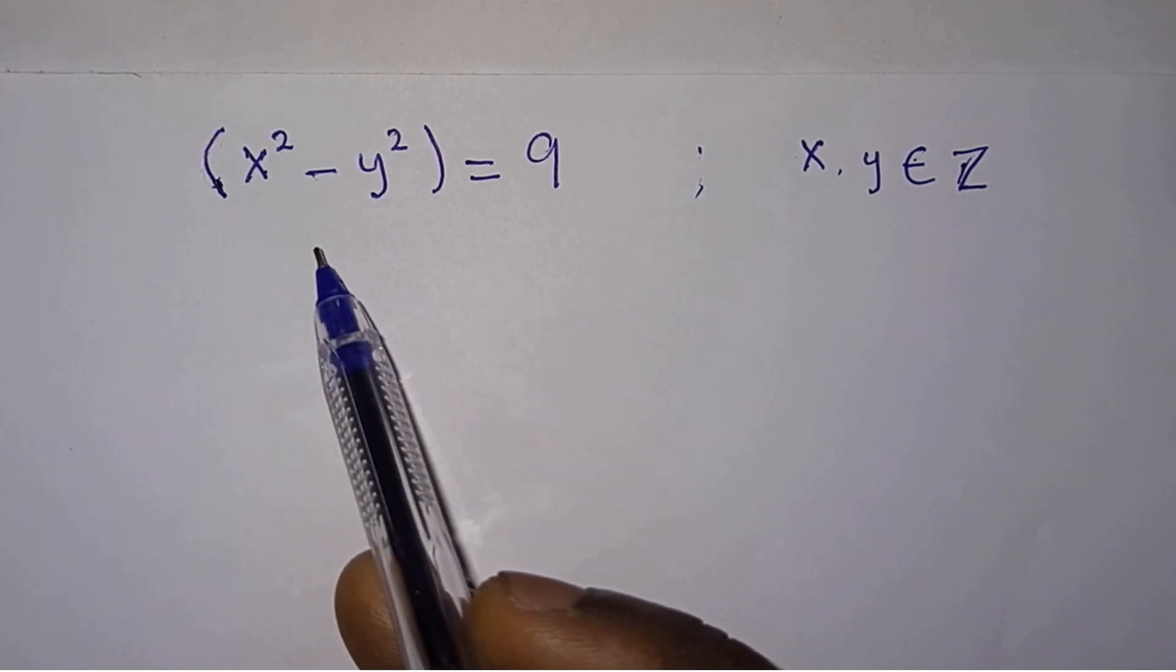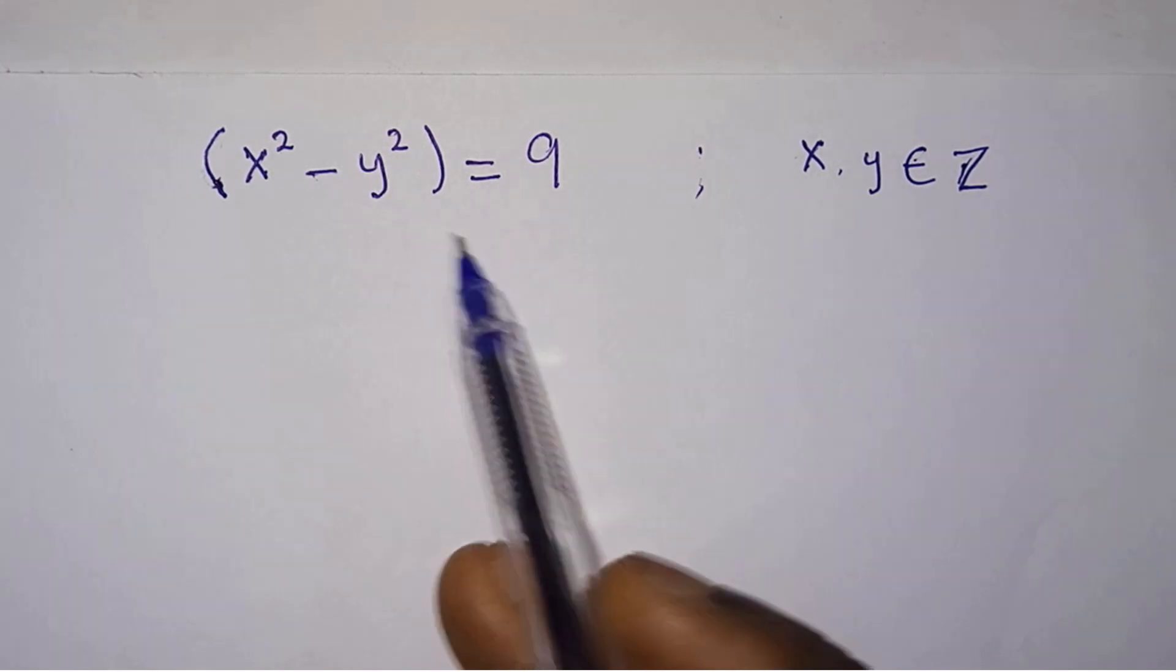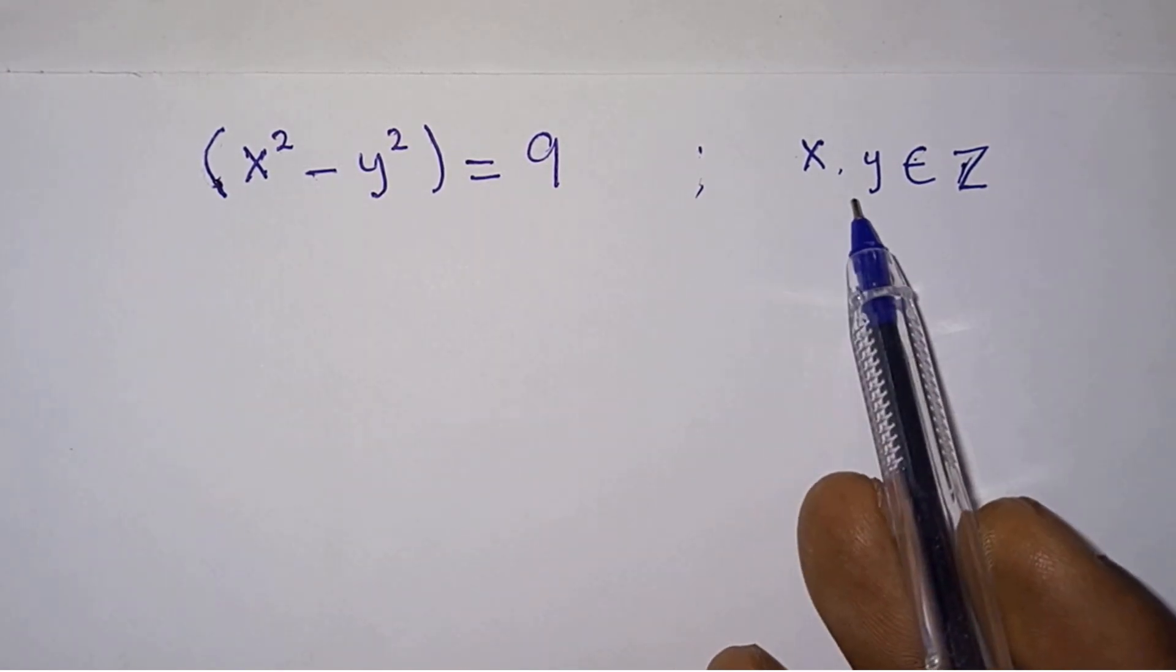Hello, how to solve for x and y in this equation? We have x squared minus y squared is equal to 9, where x and y are integers.